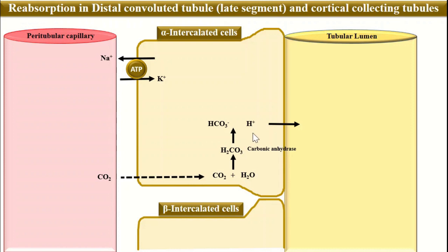What happens to this hydrogen ion? This hydrogen ion is actively pumped into the tubular lumen with the help of two important transporters. The first is a hydrogen ATPase pump that actively pumps hydrogen ions into the tubular lumen. The second is a hydrogen-potassium ATPase pump that pumps hydrogen into the tubular lumen in exchange for potassium. Both these pumps are active pumps.